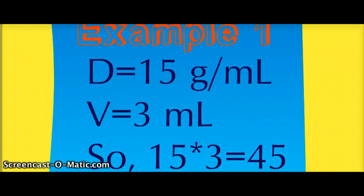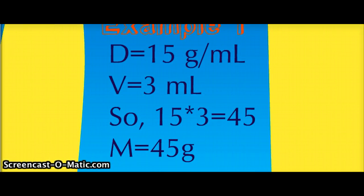Example 1. If the density of an object is 15 grams per milliliter and the volume is 3 milliliters, the mass is 45 grams.